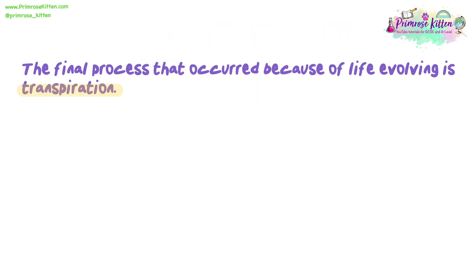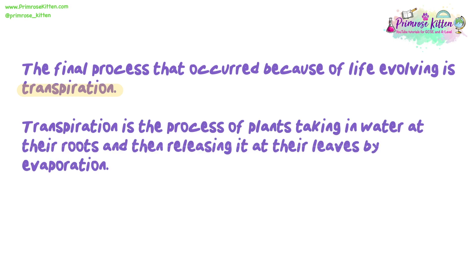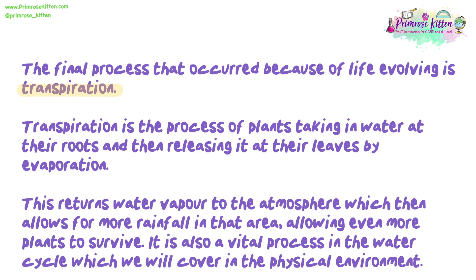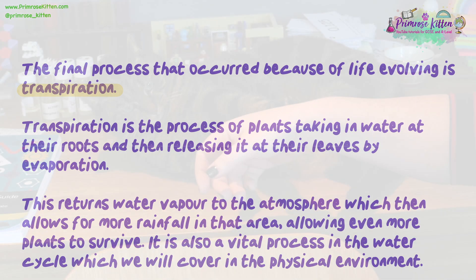The final process that occurred because of life evolving is transpiration. Transpiration is the process of plants taking in water at their roots and then releasing it at their leaves by evaporation. This returns water vapour to the atmosphere, which then allows for more rainfall in that area, allowing even more plants to survive. It is also a vital process in the water cycle, which we will cover in the physical environment topic.